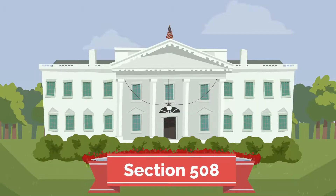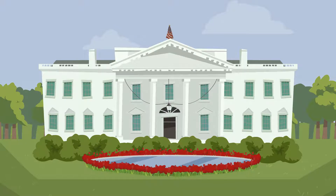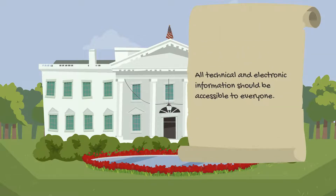Section 508, the 1998 Amendment to the Rehabilitation Act of 1973, requires federal agencies and other companies that cooperated with federal agencies to make all technical and electronic information accessible to everyone, including those with disabilities.